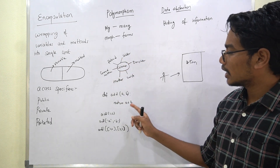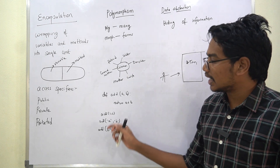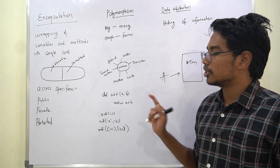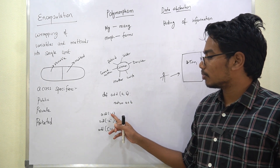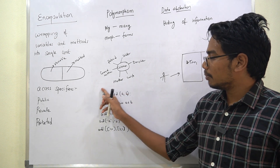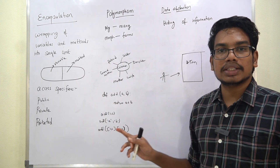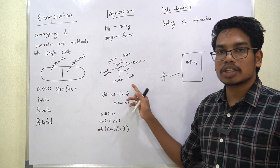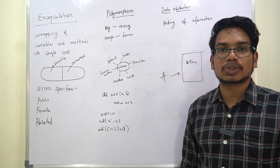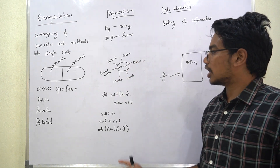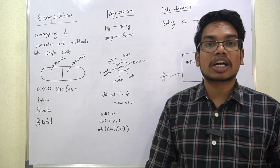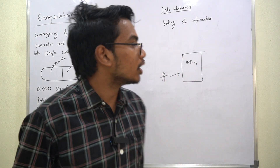A person can have multiple forms. For example, an add method — add(a, b) where a and b can be integers, or a can be a list. So with Polymorphism, we will discuss method overloading and overriding.